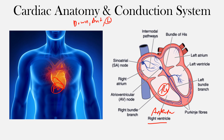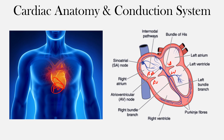That covers basic anatomy. Now I want to cover the conduction system of the heart. We've established the four chambers — right atrium, left atrium, right ventricle, and left ventricle. The conduction system starts up here with what we call the sinus node, also referred to as the sinoatrial or SA node.